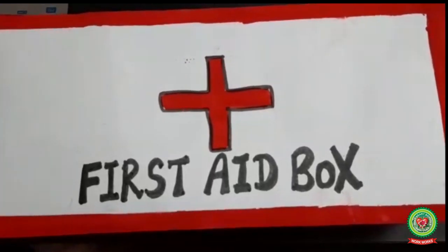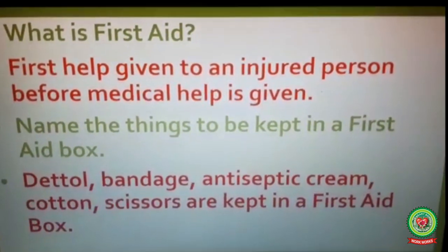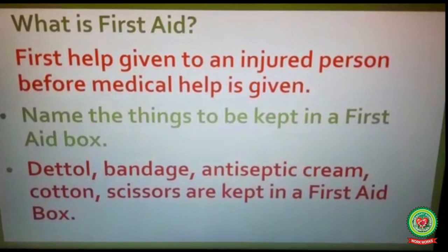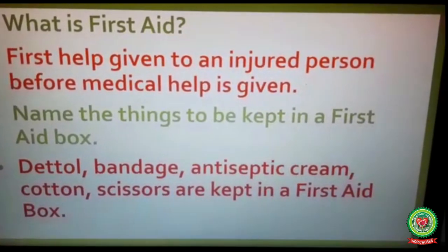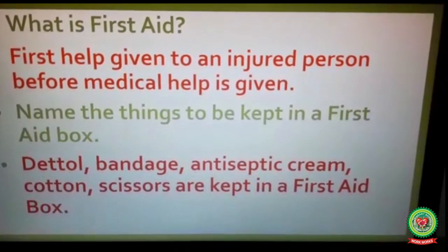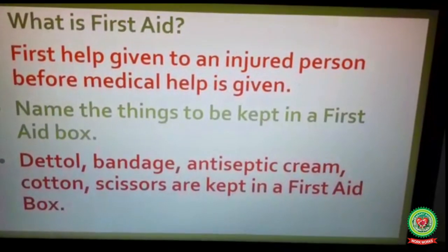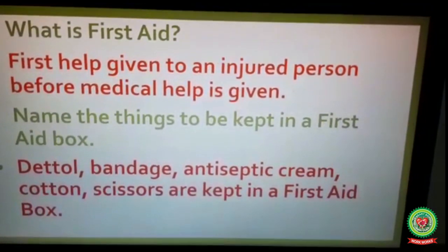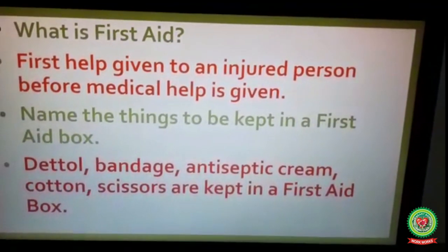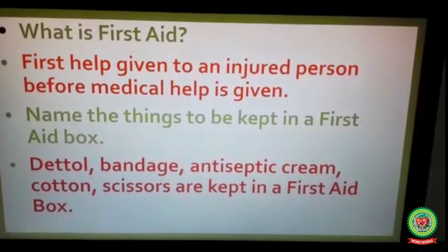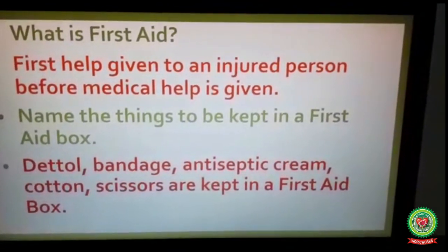Students, let's revise. My first question is: what is first aid? First help given to an injured person before medical help is given. Number two: name the things to be kept in a first aid box. Dettol, band-aid, antiseptic cream, cotton, and scissors are kept in a first aid box. Tomorrow I will continue with my new topic. Till then, kindly read the chapter and revise the terms and questions. Thank you.